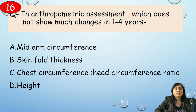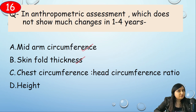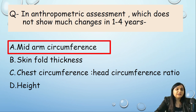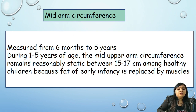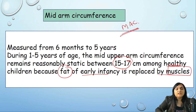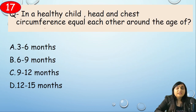Which anthropometric measurement does not show much change between 1 to 4 years — MUAC, skinfold thickness, chest circumference, or height? Students often confuse options A and C, but the correct answer is MUAC (mid-upper arm circumference). Between 1 to 5 years it remains static at approximately 15 cm in healthy children, because early infancy fat is being replaced by muscle. So MUAC remains static between ages 1 to 5 years.